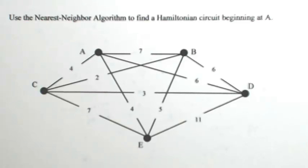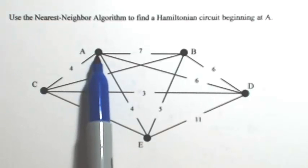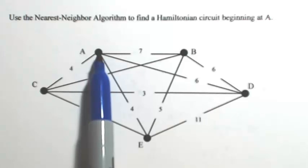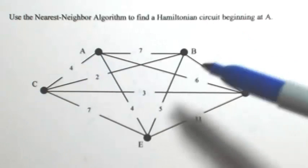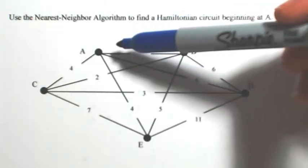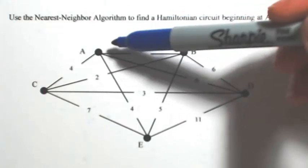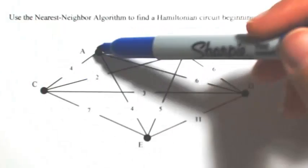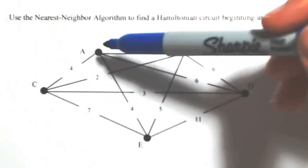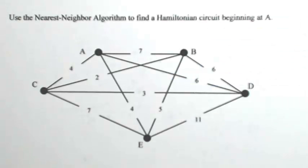Use the nearest neighbor algorithm to find a Hamiltonian circuit beginning at A. Starting at vertex A, we look for the lowest cost edge. Going to C is 4, B is 7, D is 6, and E is 4. So we actually have two possibilities — two edges tied at cost 4 — meaning there will be two possible nearest neighbor circuits to consider.